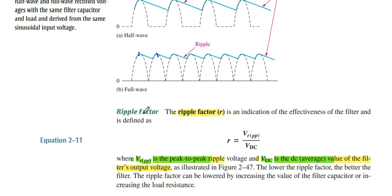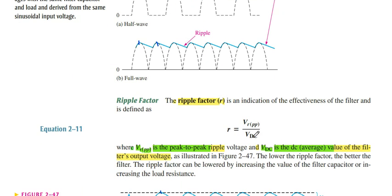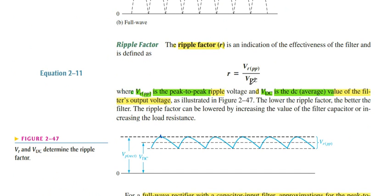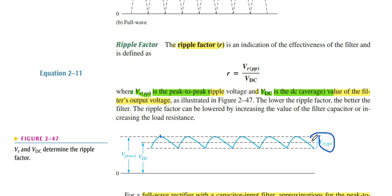The ripple factor can be found from the formula: R equals Vr(pp) divided by Vdc. Vdc is the average output DC voltage while Vr(pp) is the peak-to-peak ripple voltage.